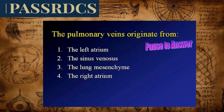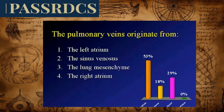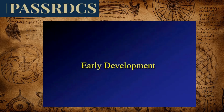The pulmonary veins originate from what structure? The left atrium? The sinus venosus? The lung mesenchyme? The right atrium? Pause to answer. Colleagues in a previous conference predominantly answered the left atrium, but unfortunately they weren't correct. The correct answer is that the pulmonary veins originate from the lungs.